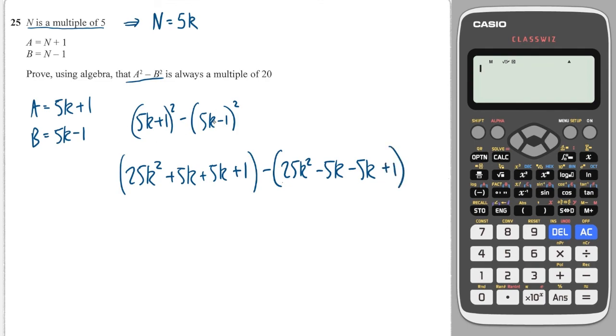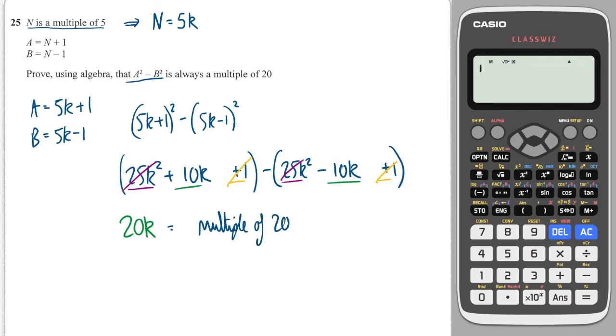It's always good to be able to expand square brackets without having to write them out twice. We can simplify the two in the middle. There were two 5ks there, so that's 10k. And this is two negative 5ks, so that's negative 10k. We can then look along and we've got 25k squared minus 25k squared, so that cancels. We've got 10k minus minus 10k, so that is 20k. And then finally we have 1 minus 1, which just cancels. So overall we get 20k, and this is clearly a multiple of 20. QED.